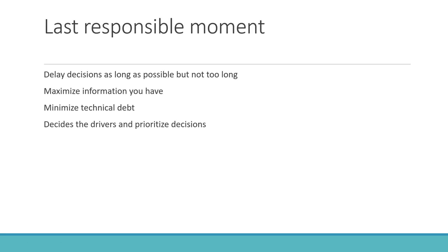The first principle is Last Responsible Moment — delay decisions as long as possible, but not too long. This means taking the time to collect all necessary information before making technology choices or design decisions. Maximize the information you have, minimize technical debt. List down all the drivers and key features of your use case, prioritize them, and only then make the decision for building the architecture.